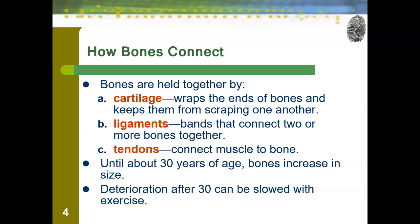Your skeleton is not just a bunch of individual free-floating bones — they are all connected. Bones are held together by cartilage, which wraps around the edge of bones and keeps them from scraping against one another. The reason your elbows, knees, and shoulders move smoothly is because there's cartilage on the end of those bones. Injuries or old age can damage or wear away this cartilage. We also have ligaments that connect two or more bones together, and tendons that connect muscle to bone — both subject to injury.